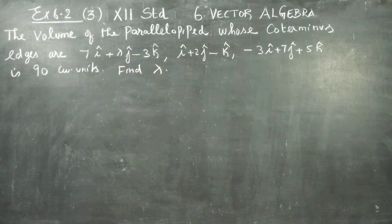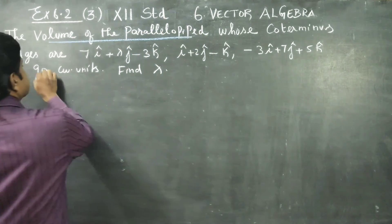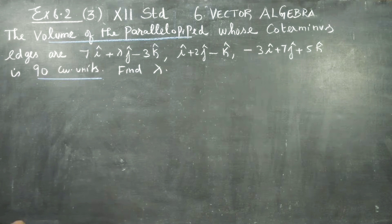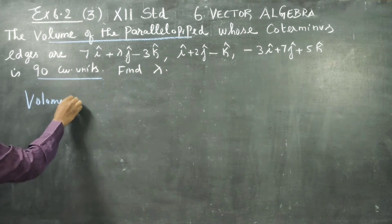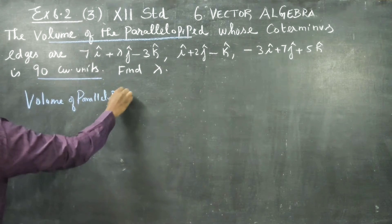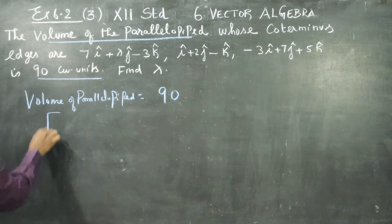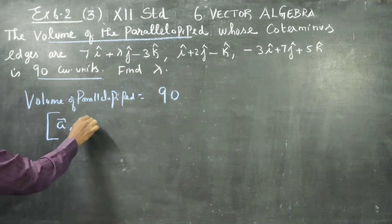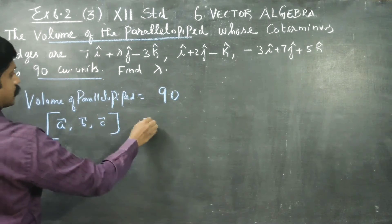Dear 12th standard students, in exercise number 6.2, sum number 3, the volume of a parallelepiped is 90 cubic units. Volume of parallelepiped is equal to 90. Volume of parallelepiped is given by the formula A-vector, B-vector, C-vector. This is equal to 90.